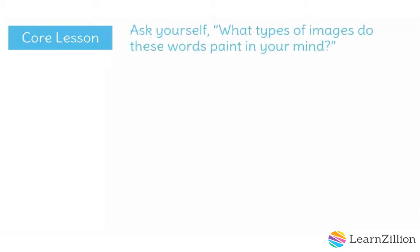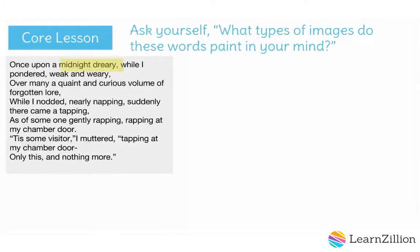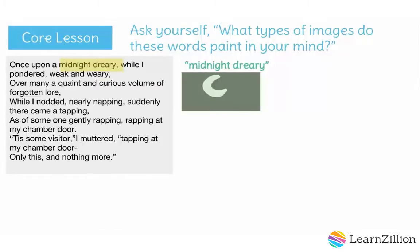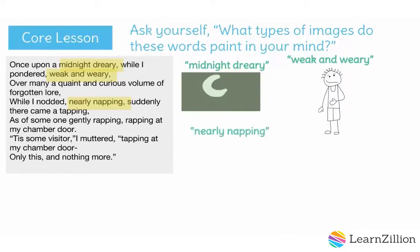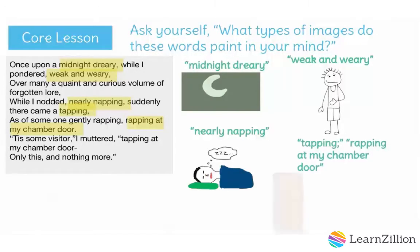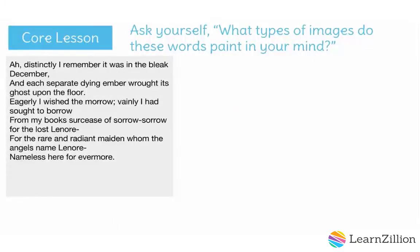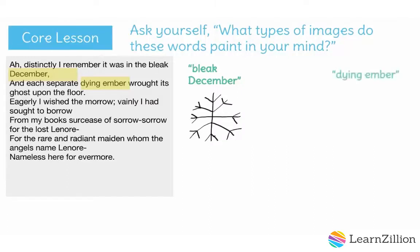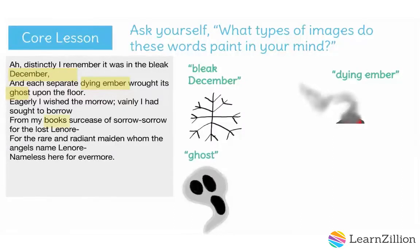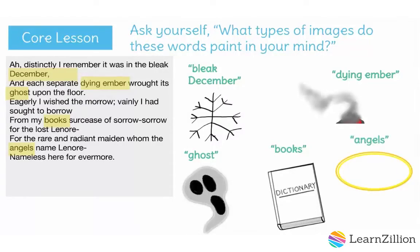Now ask yourself: what types of images do these words paint in your mind? When I think of midnight dreary, I think of the nighttime and a long night. When I think of weak and weary, I think of a weak person, either physically or emotionally. Nearly napping paints a picture of someone sleeping or trying to sleep. The tapping and rapping at my chamber door makes me think of someone desperately knocking on a door. Bleak December presents a picture of snow or the dead of winter. Dying ember paints an image of a fire that is sizzling out or dying. Ghost paints an image of an actual ghost. Books paints an image of several books on a bookshelf. And lastly, angels paints an image of several angels, possibly those with halos.